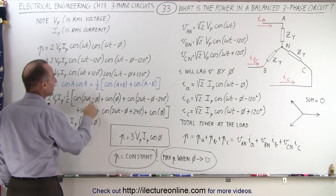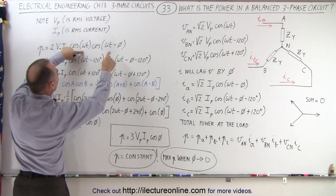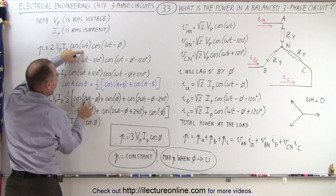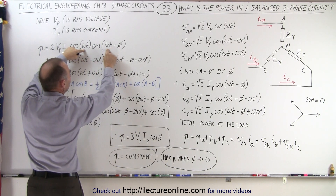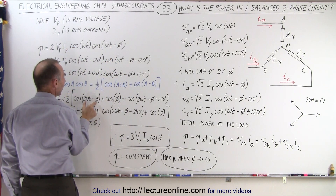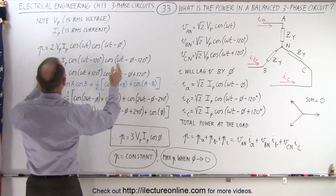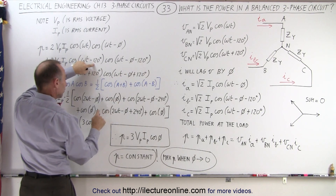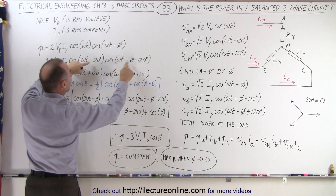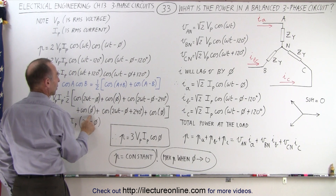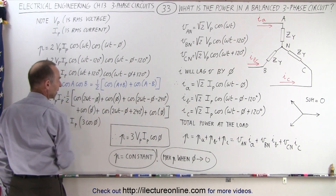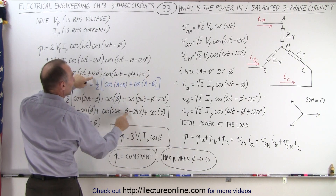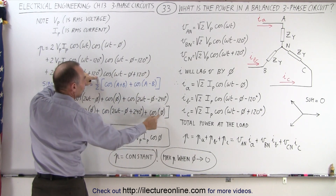We're left with the cosine of two omega t minus phi from the first term — adding the angles gives two omega t minus phi, and subtracting gives plus phi. For the second impedance, adding gives two omega t minus phi minus 240 degrees, and subtracting cancels the omega t's and 120 degrees, leaving plus phi. For the third, adding gives two omega t minus phi plus 240 degrees, and subtracting again leaves a positive phi.